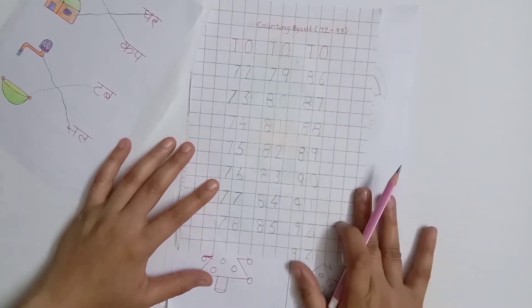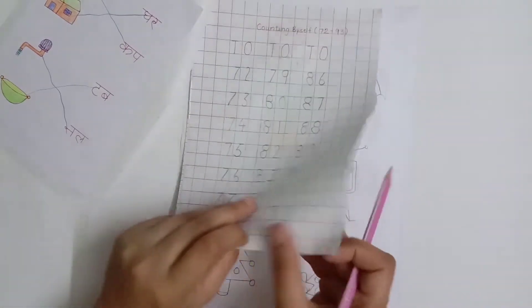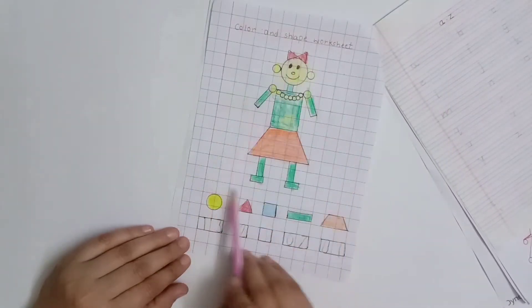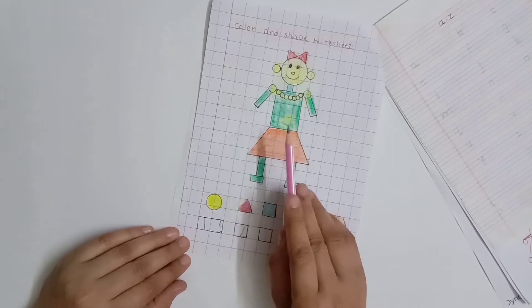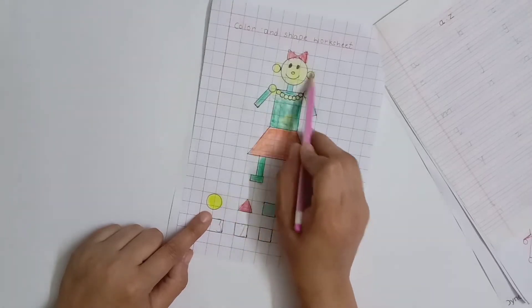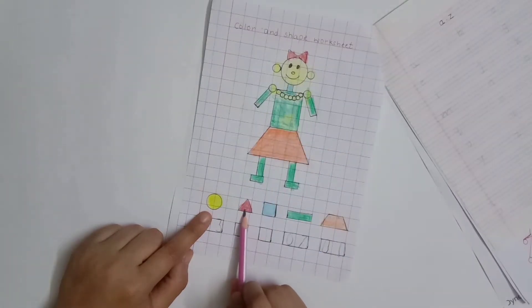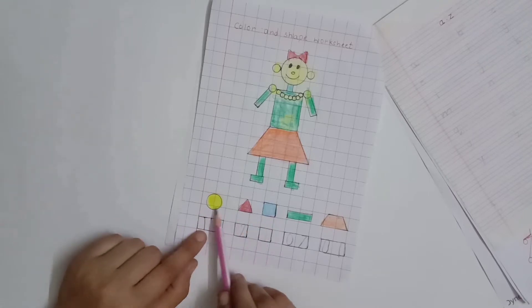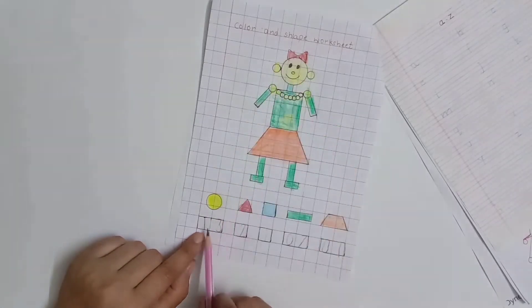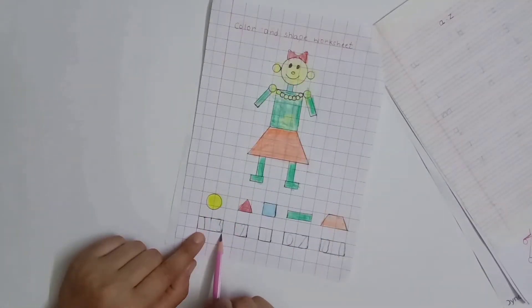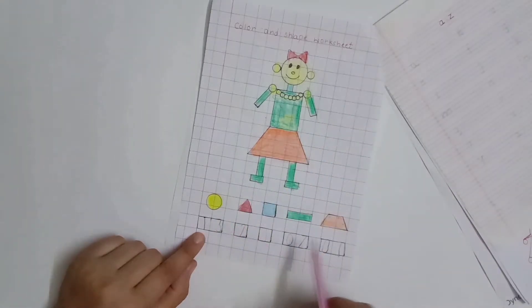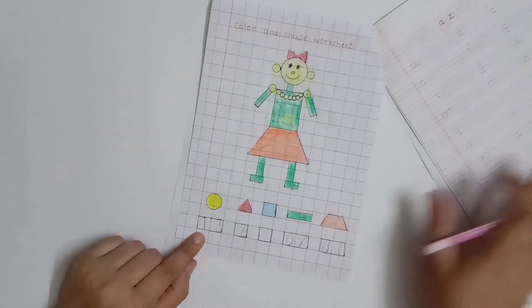After this, our next worksheet is again a math worksheet. I used picture drawing and some color coding at the bottom. I used the same colors in particular shapes - for example, here I have yellow color and red, so I used these colors accordingly. After coloring the picture, we have to count how many shapes there are. For example, here there are 13 circles, so we have to count and write. Same with triangles and other shapes.